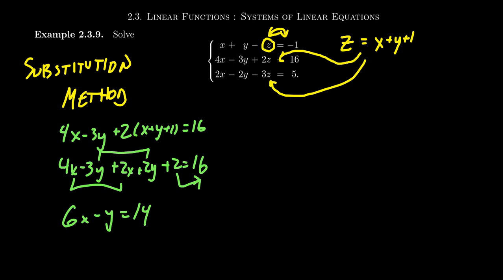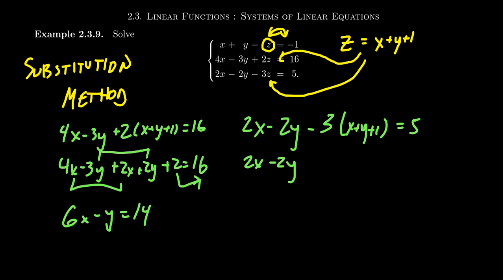We're going to do this for the third equation as well. So 2x minus 2y minus 3. Now instead of z, we're going to plug in x plus y plus 1 equals 5. Distribute that negative 3. We get 2x minus 2y minus 3x minus 3y minus 3 equals 5. Combining the x's, we're going to get negative x. Combining the y's, we get negative 5y. And then moving that 3 to the other side, we add 3 to both sides, we get 5 plus 3, which is 8.